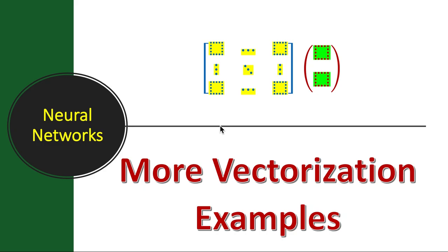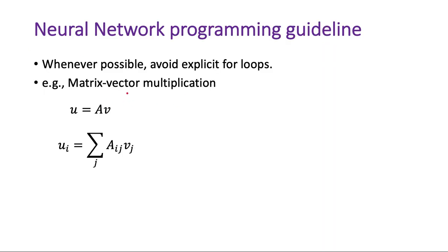In our previous lesson we had seen how vectorization can help you in speeding up your computation. We had also seen one example of multiplying element-wise vector elements, that is taking their dot product, and the vector size were 1 million length. We had seen a 100x improvement using vectorization technique. So in this lesson we will see some more examples of vectorization using numpy.